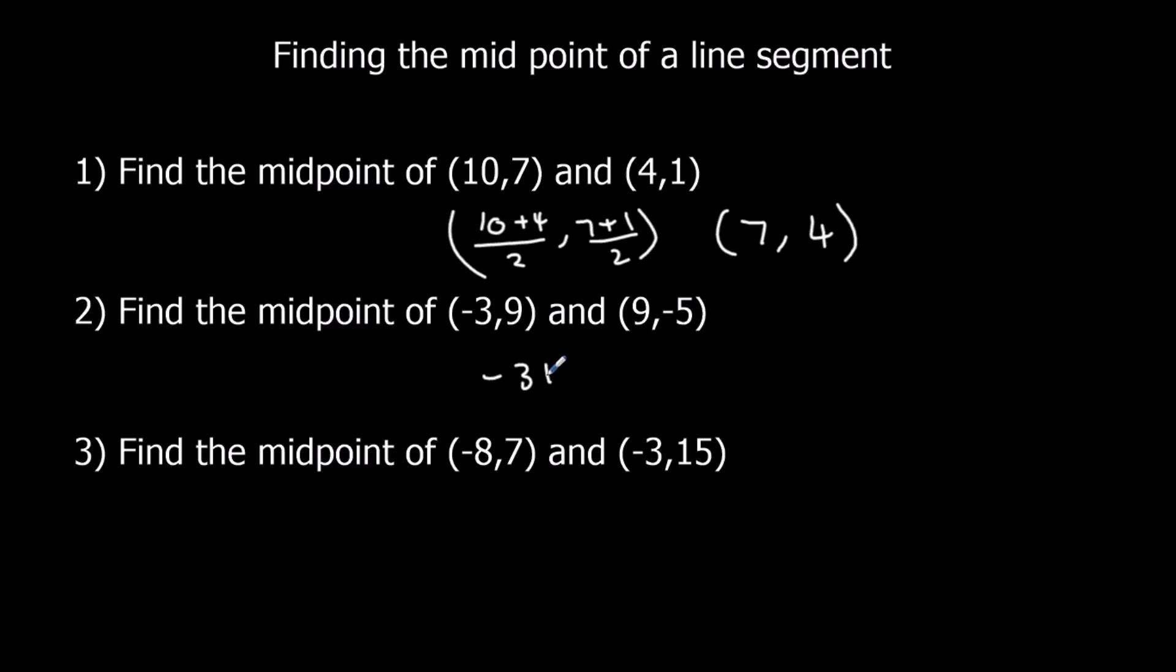Second one, minus 3, 9, and 9 and minus 5. Put a plus minus again. Minus 3 plus 9 is 6, half of that is 3. And 9 plus minus 5, so 9 minus 5 is 4, half of that is 2.